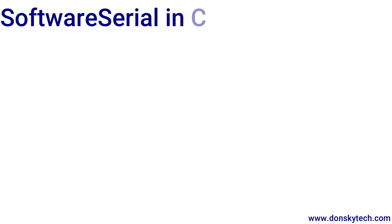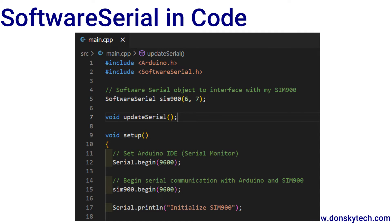Now let's discuss how software serial is implemented in code. If you are using an Arduino Uno, it's really simple — all you have to do is include the software serial library. For the Arduino AVR, the software serial is already included by default, so you don't have to include any additional library. The next thing is to declare a software serial object and pass in the receiver and transmitter pins. In my case, I am using pin 6 and pin 7 to communicate with my GSM SIM900.